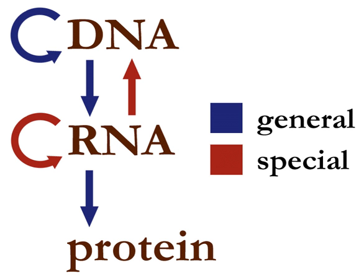The dogma is a framework for understanding the transfer of sequence information between information-carrying biopolymers, in the most common or general case in living organisms. There are three major classes of such biopolymers: DNA and RNA, both nucleic acids, and protein. There are 9 conceivable direct transfers of information that can occur between these.